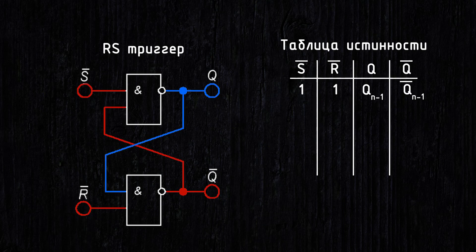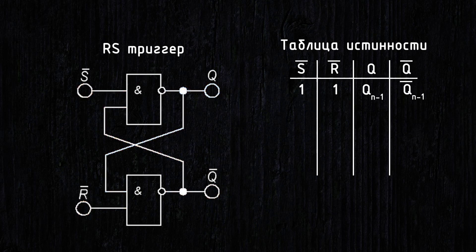Now let's change the scenario. The flip-flop was reset. There is a logical 0 at the Q output, and the scenario changes symmetrically. At the top, two 1s give a 0, and at the bottom, 1 and 0 give a 1. The state of the flip-flop is maintained, which is why this is called the storage mode.